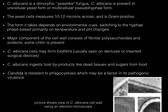Candida albicans is a dimorphic yeast-like fungus. Dimorphic means that it can be present as a unicellular yeast form or a multicellular pseudohyphae form. The yeast cells measure 10 to 12 microns across and it is gram positive. The form it takes depends on environmental cues, switching to the hyphae phase based primarily on temperature and pH changes.